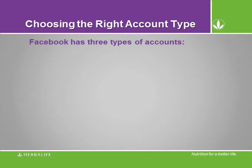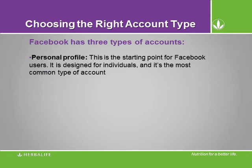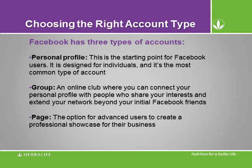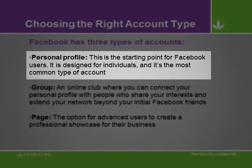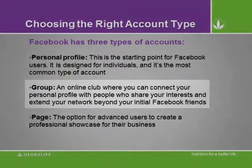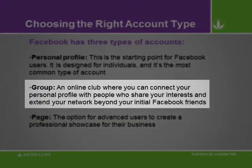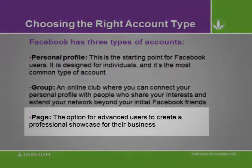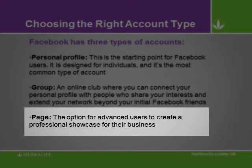Facebook has three types of accounts: personal profile, group, and page. The personal profile is the starting point for Facebook users — it is designed for individuals and is the most common type of account. The profile lets you connect with friends and share family moments. A group is an online club where you can connect your personal profile with people who have different interests and extend your network beyond your Facebook friends. A page is the option for advanced users to create a professional showcase for your business.